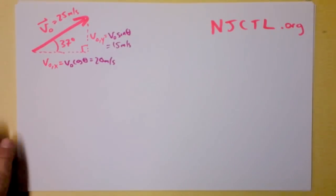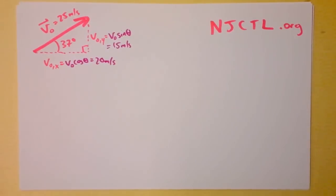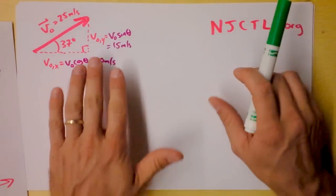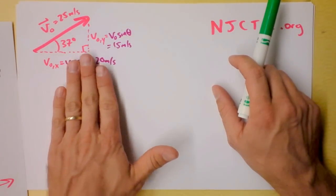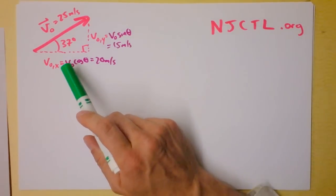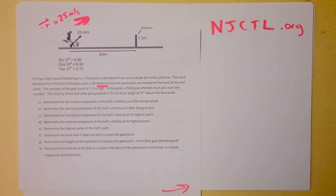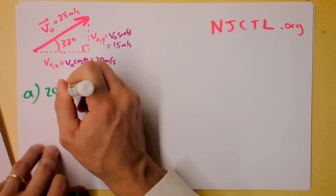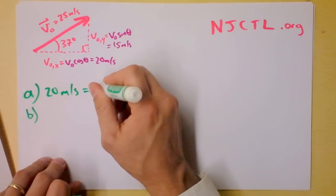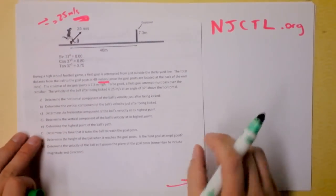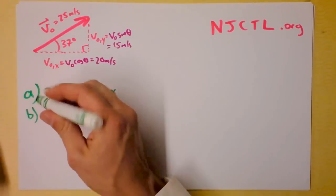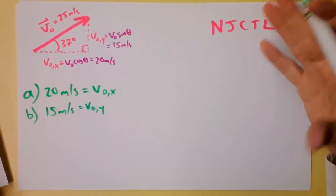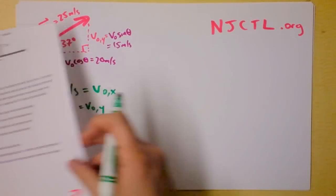There's a little error since it's not exactly 37 degrees, more like 36.9. But here's what I want to do: resolve the initial velocity vector first — you must do this before every problem, because there's acceleration in y and no acceleration in x. Part A asks for the horizontal component just after being kicked: that's 20 meters per second. Part B asks for the vertical component: 15 meters per second. NJCTL is walking us through this problem step by step.